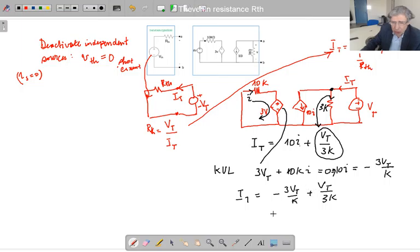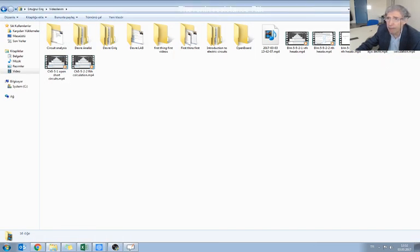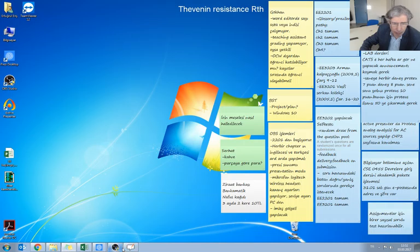10I is minus 3VT over K, plus VT over 3K. So, if you calculate this, it's going to be in this form. IT equals VT, and that is 1 over RTH. So, if you do this calculation, VT becomes, as we already find, minus 3.75 ohm resistance voltage. This is the one that we have found by using the first method. So, that's the end of this video then.